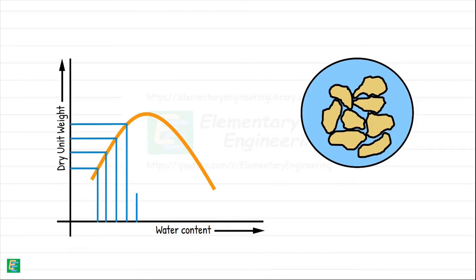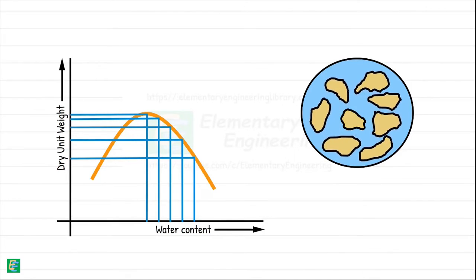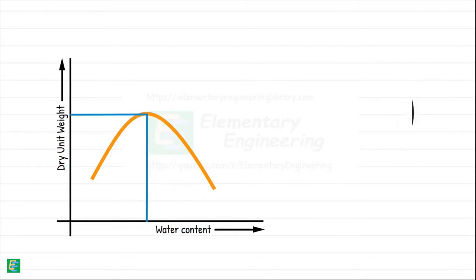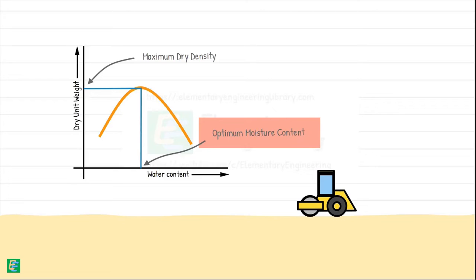The dry unit weight continues to increase till a maximum value is reached. Then, if we keep adding water to the soil, the dry unit weight begins to decrease because now water begins to occupy the space that otherwise might have been occupied by the soil particles. So in the compaction curve, we can notice that soil achieves its maximum dry density, or we can say soil is most compacted, at a certain moisture content known as optimum moisture content. This means when we are working in the field, it's best to compact the soil at this specific moisture content.